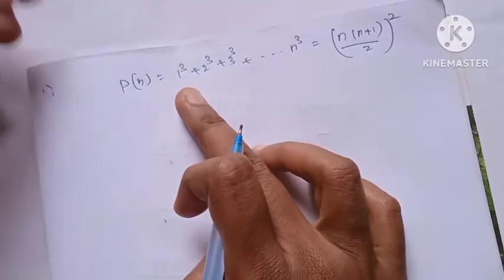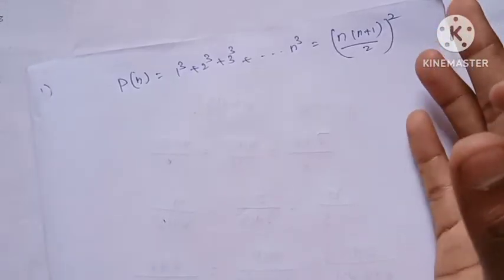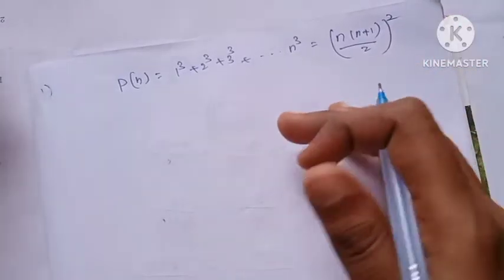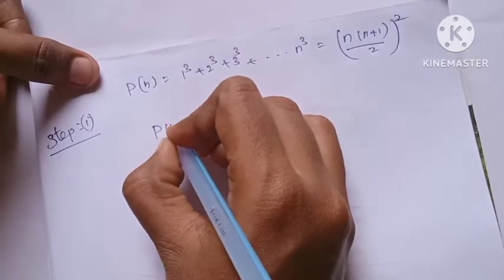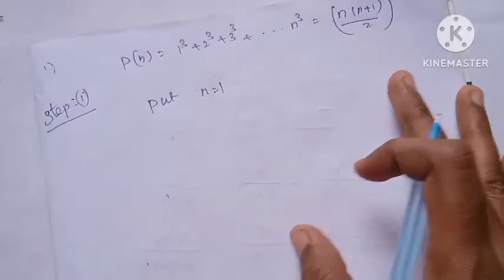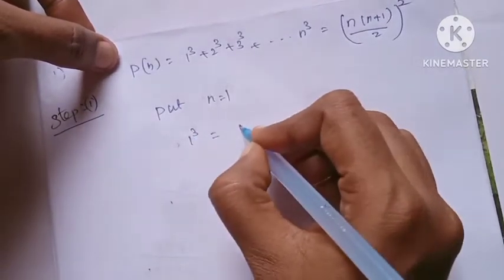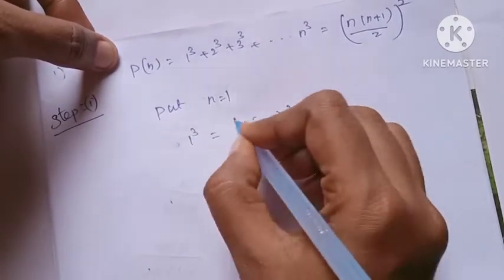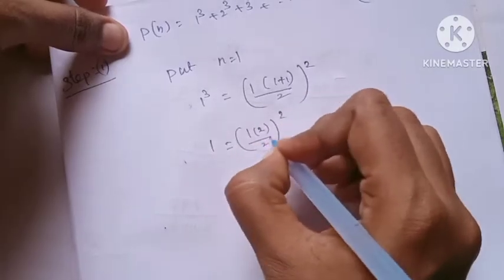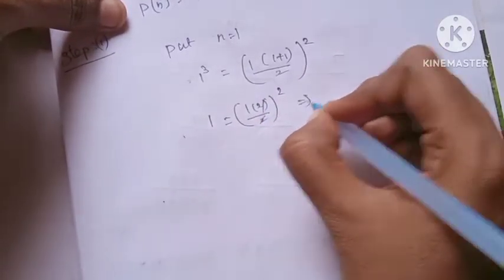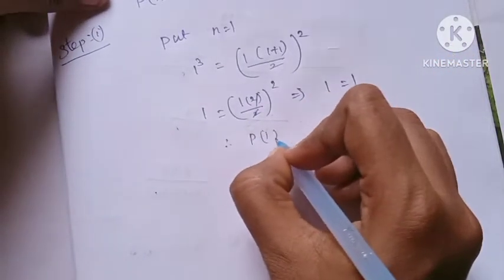Step 1: Substitute n equal to 1. LHS is equal to 1 cube, which equals 1. RHS is equal to 1 into (1 plus 1) by 2, the whole square, which is 1 into 2 by 2, the whole square, equal to 1. So LHS is equal to RHS, therefore P of 1 is true.